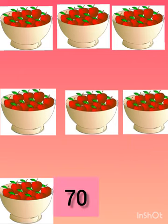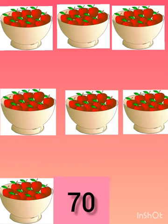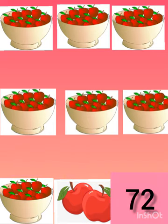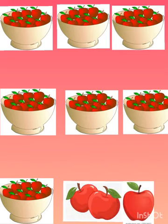Now I am adding one apple. How many apples will be there now? 71. I am adding 2 apples — how many apples will be there now? 72. As you all know, we have seven baskets of apples, which means we have 70 apples. I am adding 3 apples — how many apples will be there? 73 apples.